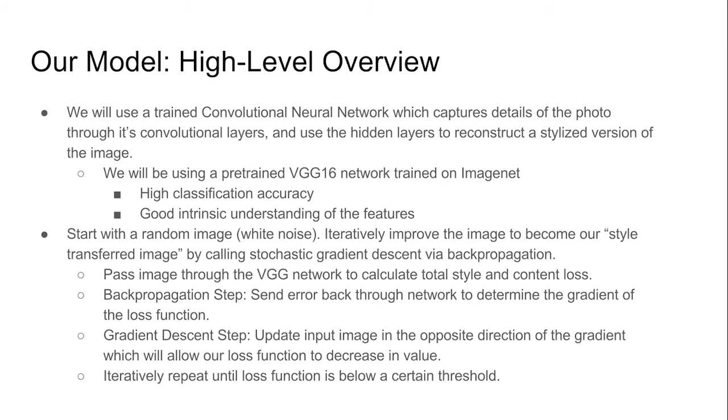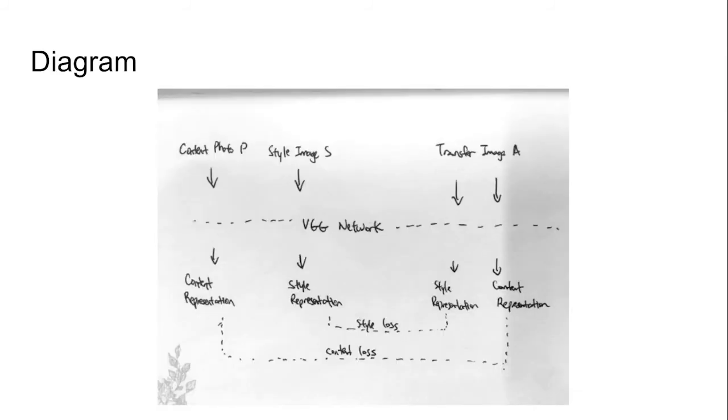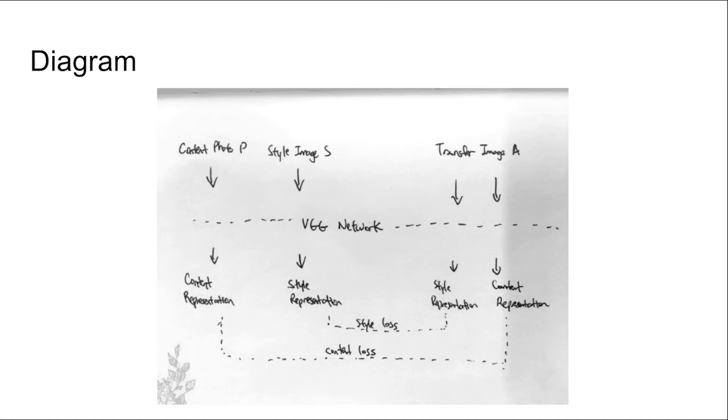We will iteratively improve the image to become our style transferred image by calling stochastic gradient descent via backpropagation. First, we pass the image through the VGG network to calculate the total style and content loss. We perform the backpropagation step by sending the error back through the network to determine the gradient of the loss function. Then we perform gradient descent. We update the input image in the opposite direction of the gradient, which will allow our loss function to decrease in value. Finally, we will iteratively repeat this until the loss function is below a certain threshold. The following diagram on this slide shows a visual representation of our model.